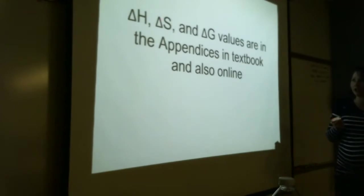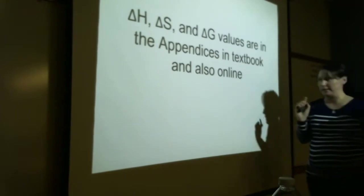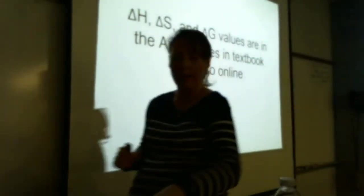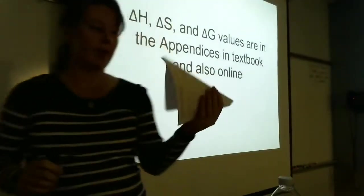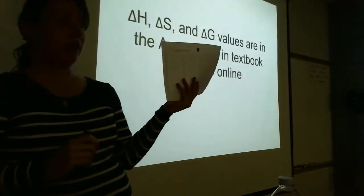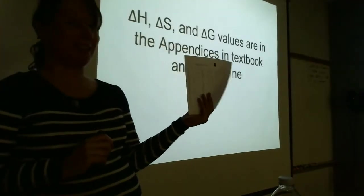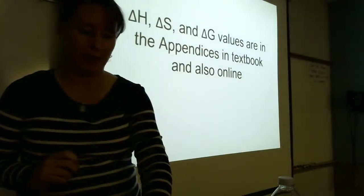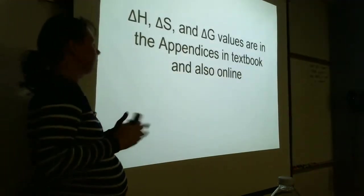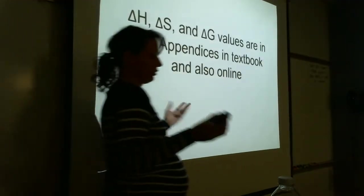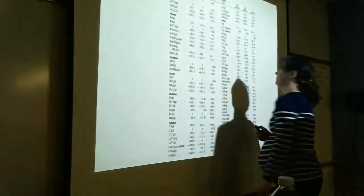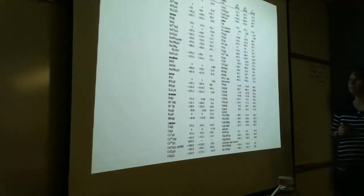So delta H, delta S, delta G values are all in the appendix at the back of your book. This is the handout I just gave you — it's an extremely condensed version of the appendices at the back of your book. You could also just search it on the internet if you need another copy.